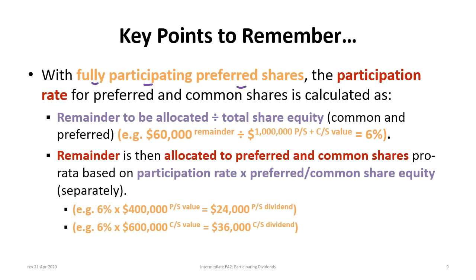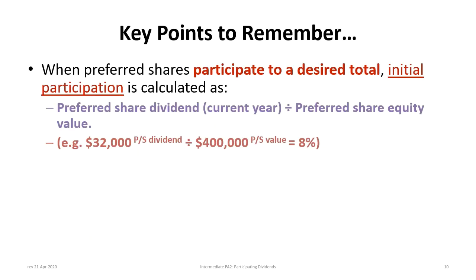For fully participating preferred shares, determine the participation rate calculated as the remainder to be allocated divided by total share equity. In the example, $60,000 remainder divided by $1,000,000 total preferred and common share value equals 6%. That remainder is then allocated pro-rata: 6% times $400,000 preferred equals $24,000 in preferred dividends, and 6% times $600,000 common equals $36,000. Remember, $400,000 plus $600,000 must equal $1,000,000 total shareholders' capital.